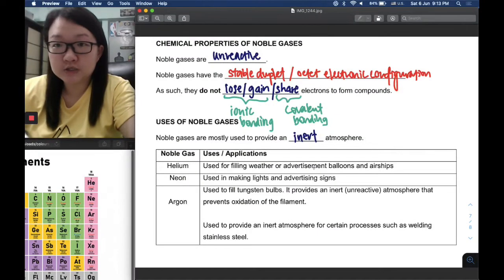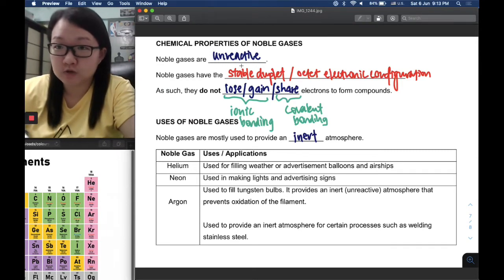Moving on to the chemical properties of noble gases: noble gases are unreactive, so they do not undergo any chemical reactions. The important part is to understand the reason and explanation behind why they are unreactive.